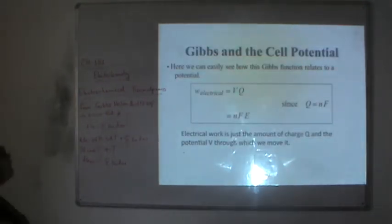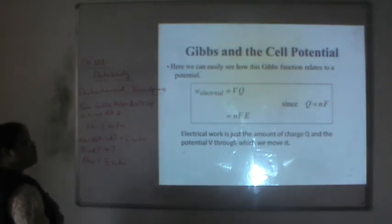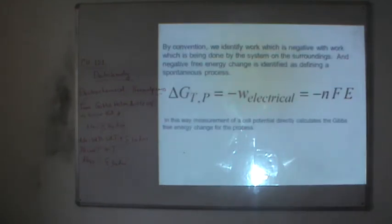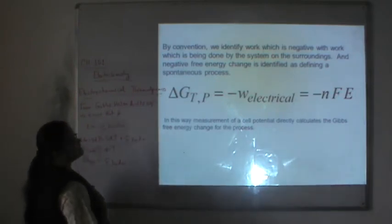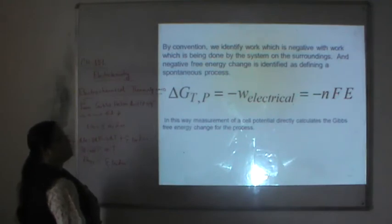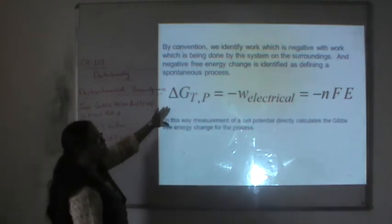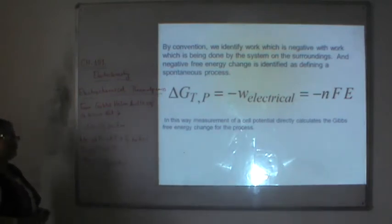When we put W = VQ, where V is the electric potential and Q is the charge, and Q = NF, we get W_electrical = NFE. By convention, work done by the system on surroundings is negative, so for a spontaneous process, ΔG = −NFE. This means the measurement of cell potential directly gives the free energy change for the process.